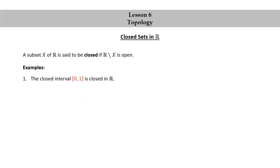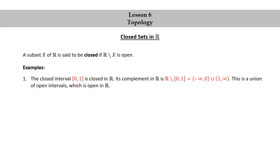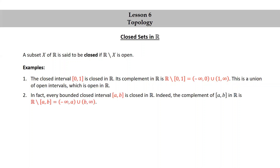Let's look at some examples. The closed interval [0,1] is closed in R. Its complement in R is R minus [0,1], which is the infinite open interval (-∞, 0) union the infinite open interval (1, ∞). This is a union of open intervals, which is open in R. In fact, every bounded closed interval [A,B] is closed in R. Indeed, the complement of [A,B] in R is R minus [A,B], which equals the union of the two infinite open intervals (-∞, A) union (B, ∞). This is a union of open intervals, which is open in R.